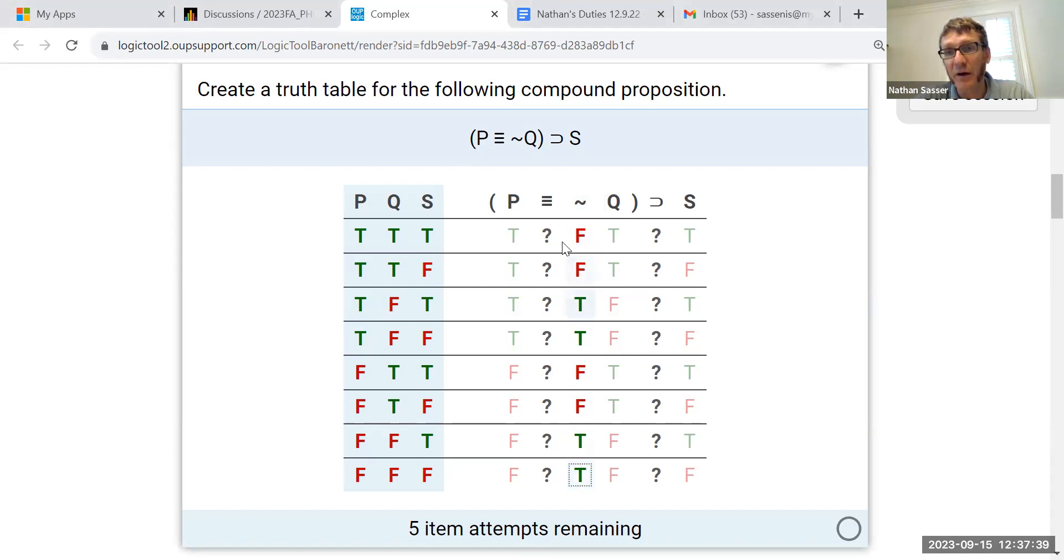Now we can determine the truth value of the biconditional. Remember, the biconditional, the triple bar, is true if both things on each side have the same truth value. So if they're both true or if they're both false, the triple bar is true. However, if they're different, if one's true and the other's false, then triple bar is false.